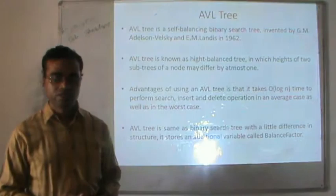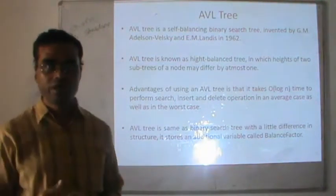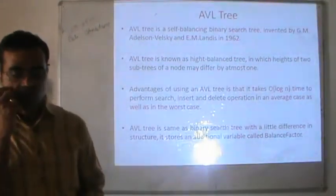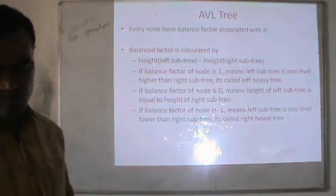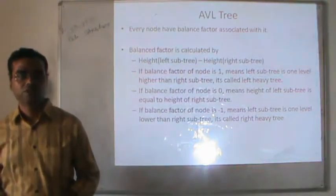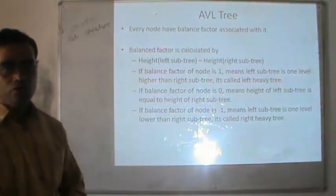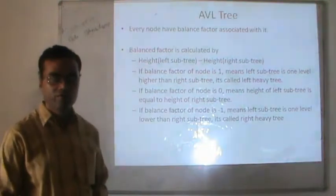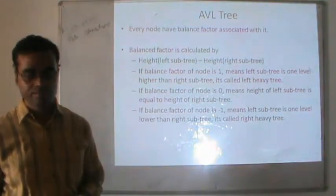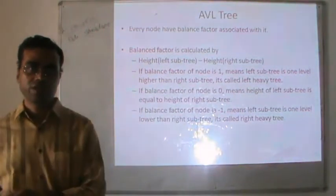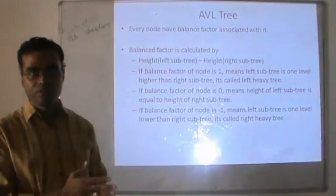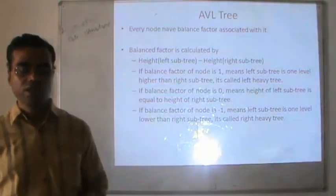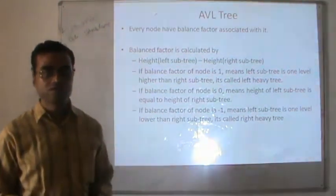The AVL tree is the same as the binary search tree; the only difference in structure is that we store a variable called balance factor with every node. The balance factor is calculated by taking the height of the left subtree and subtracting the height of the right subtree. If the balance factor is positive one, the left subtree is one level higher than the right subtree, and it is called a left-heavy tree.